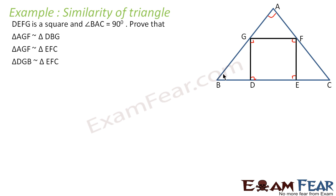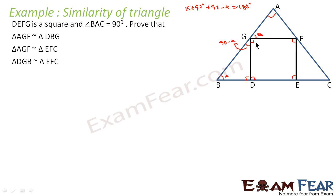Let us assume this angle is A. This one is 90, so this becomes 90 minus A. Let me call the unknown angle X. X plus 90 plus (90 minus A) equals 180. So X equals A. This angle becomes A, and the adjacent angle becomes 90 minus A.